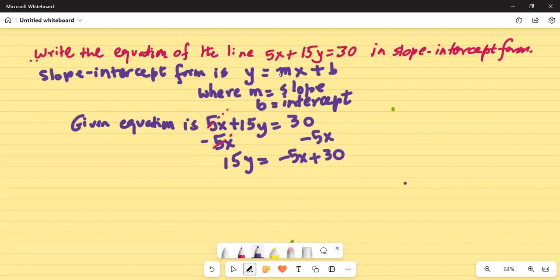This is the slope-intercept form y equals mx plus b, so I have to remove the coefficient of y on the left-hand side, which is 15. Since 15y means 15 multiplied by y, the opposite of multiplication is division. I divide by 15, and since this is an equation, I have to divide by 15 on both sides.